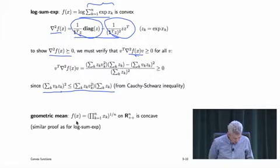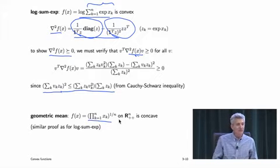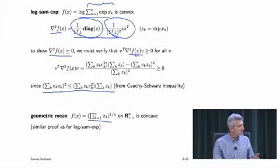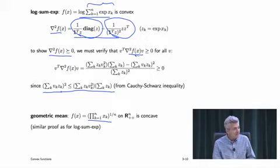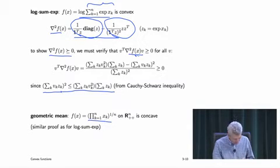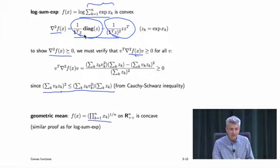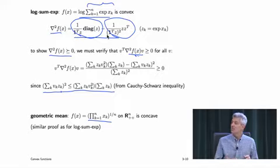The geometric mean — the n-th root of the product of positive numbers — is concave. For this and similar functions, the Hessian has the form of a non-negative diagonal minus a rank-one matrix, and the same type of argument holds.